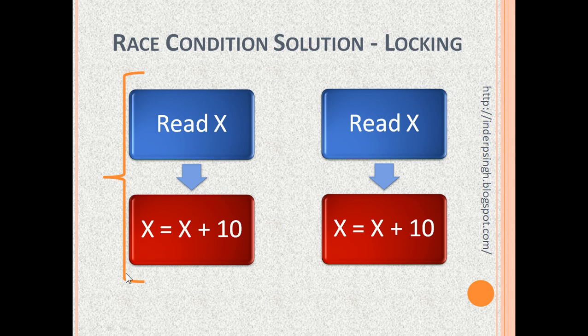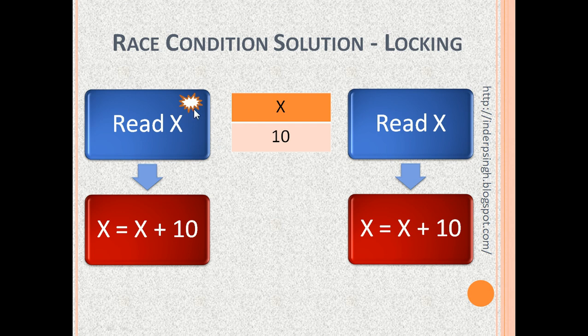Now, let us say that we want to execute these two processes, but with locking. So, what happens? In process 1, x is locked. Initial value of x is 10.